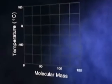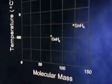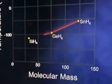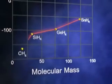In a series of similar compounds, such as these group 4A hydrides, boiling point typically decreases with decreasing molecular mass. This reflects the smaller London dispersion forces that exist between smaller molecules.